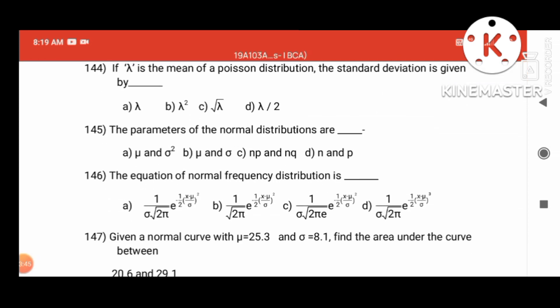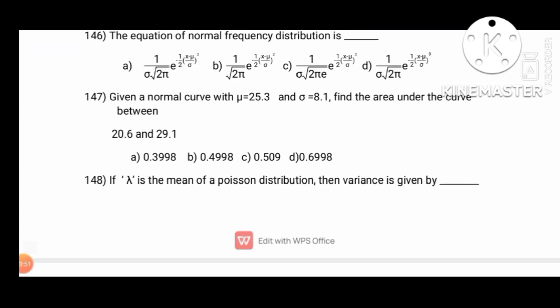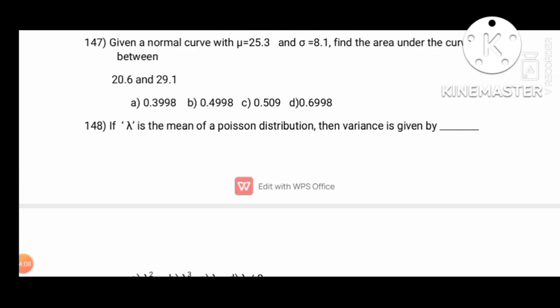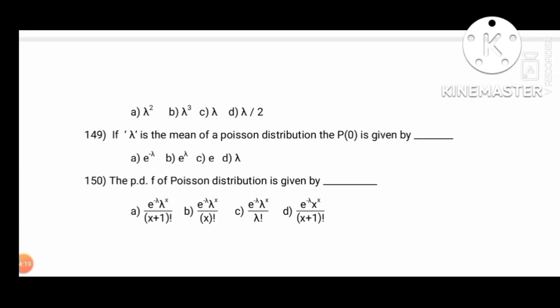That is the mu sigma — that is the equation of the frequency distribution. Question 146: the given normal curve with mu equal to 25.3 and sigma equal to 8.5, and the area under the curve. Lambda is the mean of the Poisson distribution; the variance is also lambda. The PDF of the Poisson distribution is given by e to the power minus lambda, times lambda to the power x, divided by x factorial.